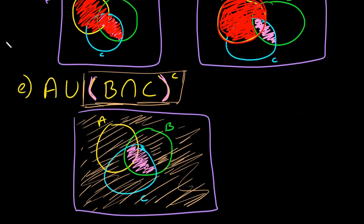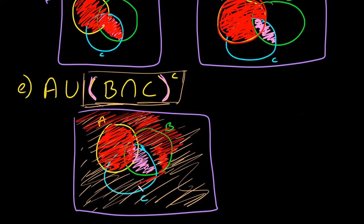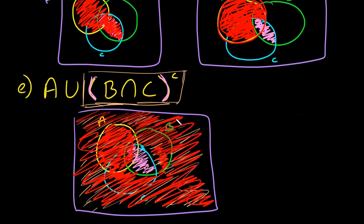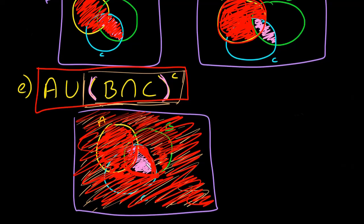Now I need to do A union the complement. Union means 'or,' so I need to belong to the tan area or I need to belong to A. The tan area is literally everywhere except for the elements that belong in both C and B — everywhere except for this spot right here. So the result is everywhere except for that pink intersection area where B and C overlap.